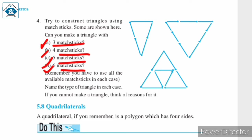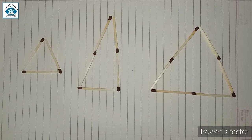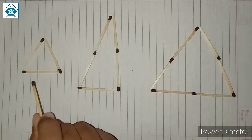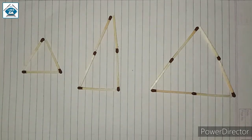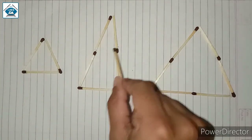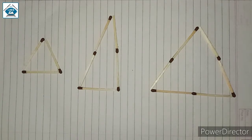Let us see the solution. We are asked: can you make a triangle with 3, 4, 5, and 6 matchsticks, using all available matchsticks in each case? I have made a triangle using 3 matchsticks. Here, 5 matchsticks are used and this triangle is made. And here, 6 matchsticks are used and a triangle is made.